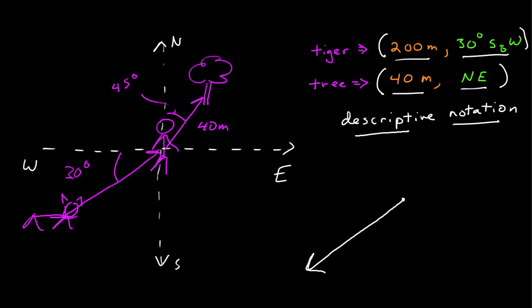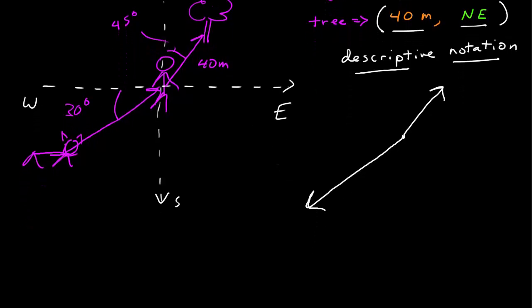We can represent vectors as arrows. If we do that, then of course the arrow points in the direction that the vector is pointing. And you can make the length of the vector representative of the amount. Now that doesn't always work, because sometimes they just become too large or too small. And also, remember there are lots of vectors that are not just distances.